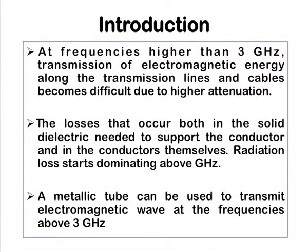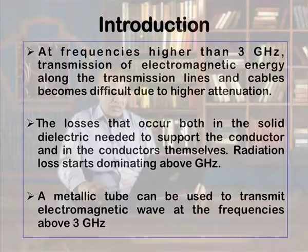First, we give the introduction that at frequencies above 3 gigahertz, transmission of electromagnetic energy along the transmission line and cables becomes difficult due to higher attenuation. In the transmission line, various types of losses are there, and one of the losses is radiation loss. This radiation loss is higher when the dimension of the transmission line becomes comparable to the wavelength. So at gigahertz frequencies, the wavelength is only 3 centimeters, so the signal starts to radiate before it propagates.